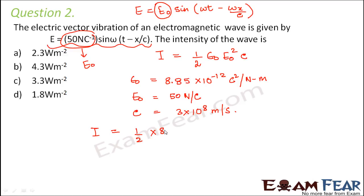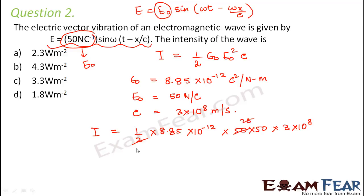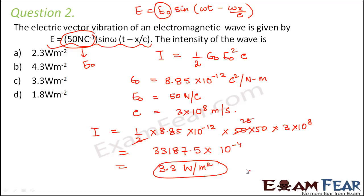The intensity is: (1/2) × 8.85 × 10⁻¹² × 50 × 50 × 3 × 10⁸. Computing this gives 33187.5 × 10⁻⁴, which is equal to 3.3 watt per meter squared. So option C is the correct answer.